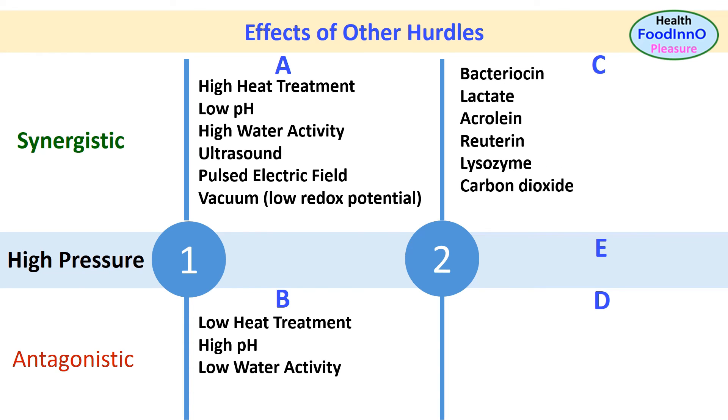In group 2C, the listed hurdles work as synergistic. These are preservatives, that is bacteriocin, lactate, acrolein, reuterin, lysozyme, and carbon dioxide.